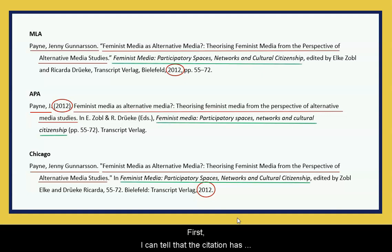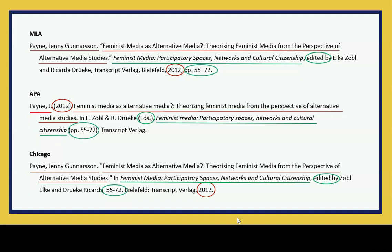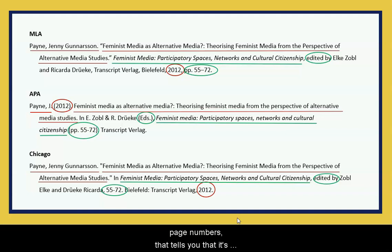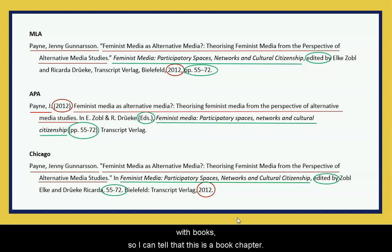First, I can tell that the citation has a second title. There are also editors included in the citation. And finally, there are page numbers. Usually when you include page numbers, that tells you it's probably a journal article, a magazine article, or a book chapter. Since these citations include editors, that usually only happens with books — so I can tell that this is a book chapter.